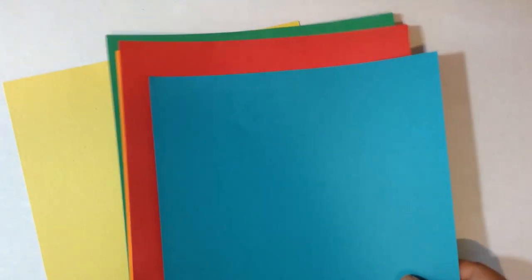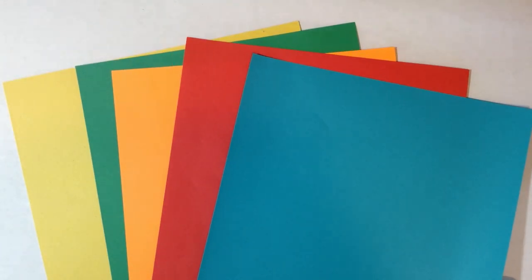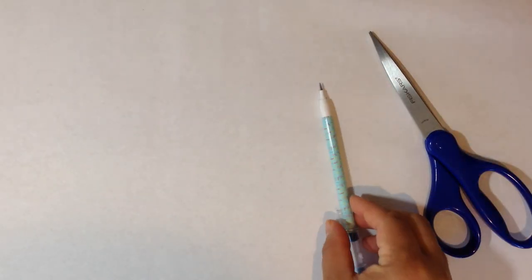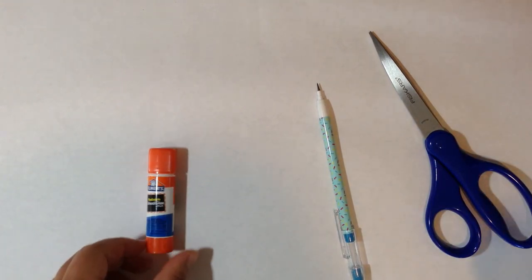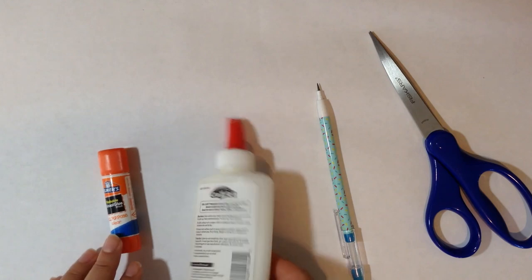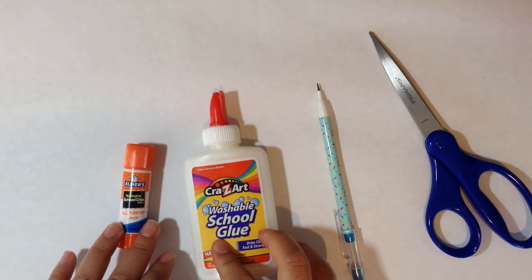Different pieces of colored paper, black paper or black construction paper. You will need to have your pair of scissors. Please remember little ones always ask an adult for help. A pencil to make your tracing, a glue stick or Elmer's glue to glue down your pieces.